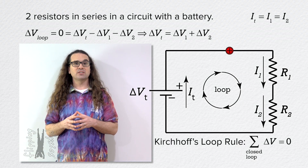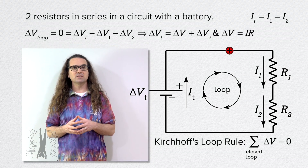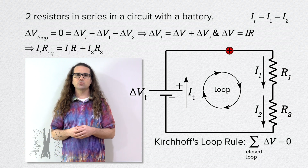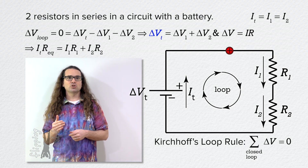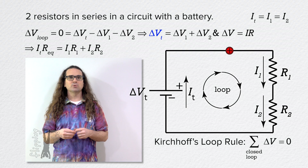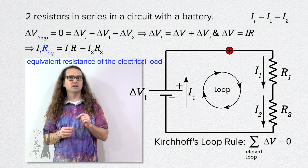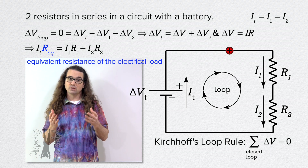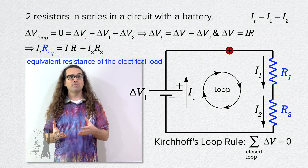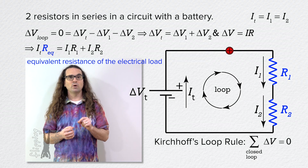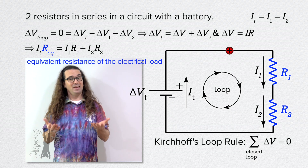Because electric potential difference equals current times resistance, we can substitute current times resistance for each of the electric potential differences. For the battery, the terminal voltage equals the current at the terminals times the equivalent resistance of the electrical load. The electrical load in this circuit is the two resistors in series, so the equivalent resistance in this circuit will be the resistance of the two resistors in series.